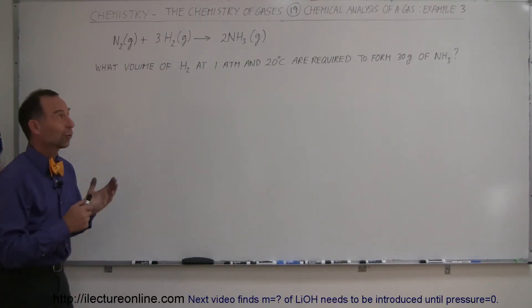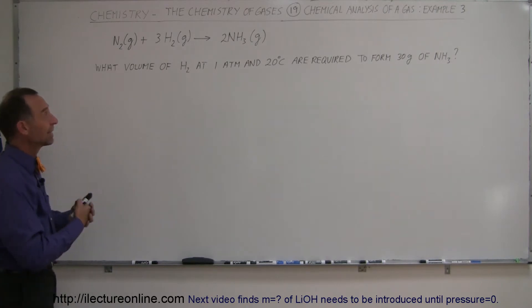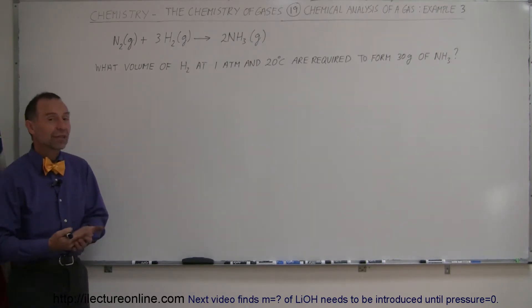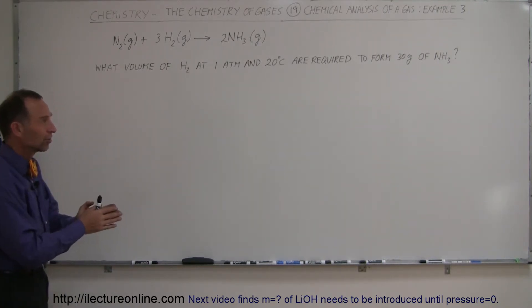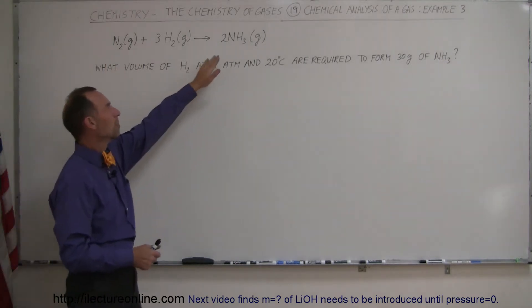Welcome to our lecture online and here's our third example of how to use chemical analysis now that we understand how to find the volume and density of gases and how to relate that to their masses. We should be able to figure out how to do this problem. So here we have a relatively simple reaction. We have nitrogen gas reacting with hydrogen gas to form ammonia.